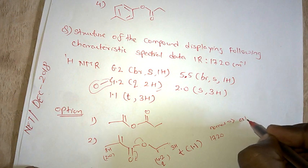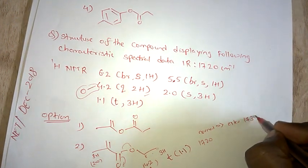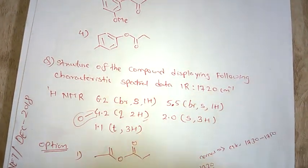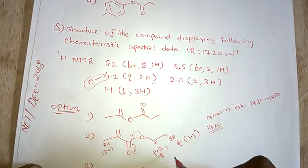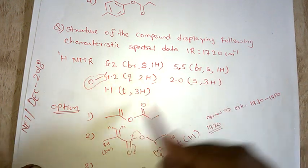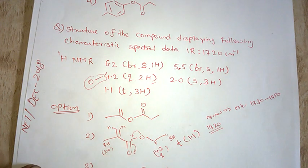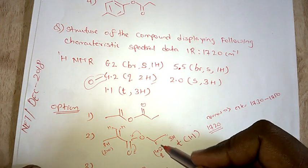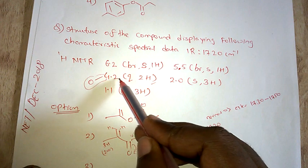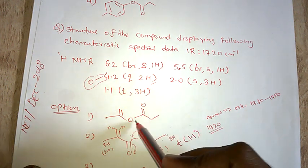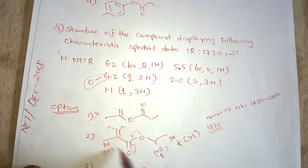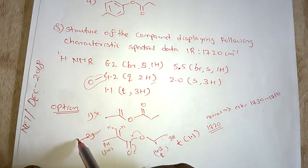Normal ester group value is around 1720 to 1750. Due to conjugation it decreases, so you have 1720. When you see that CH2 is not attached to oxygen in this group - I have told you 4.2 quartet 2H means CH2 will be attached to oxygen. This group does not satisfy this condition, so this is not our answer. This one satisfies, so this is your answer.